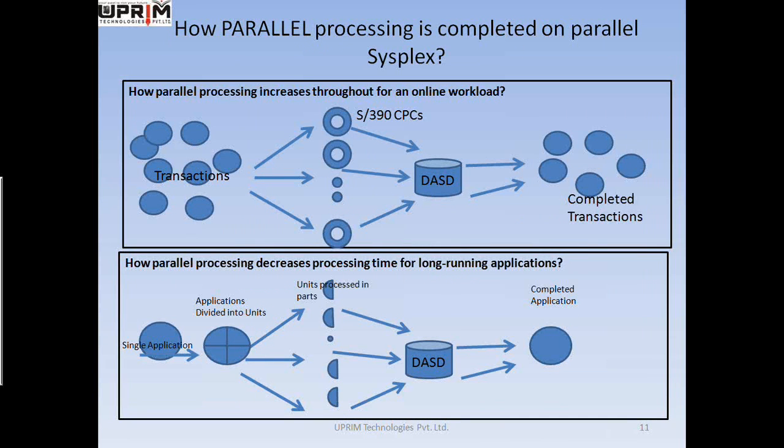The first diagram illustrates how two or more CPCs can process online transactions simultaneously. The WLM works in conjunction with a transaction manager like CICS to distribute applications to the available CPCs. The transactions processed in parallel can be the same or different transactions. The second diagram shows how a long-running application can be split into smaller units of work running in parallel — for example, one program performing updates and another printing a listing, running concurrently.